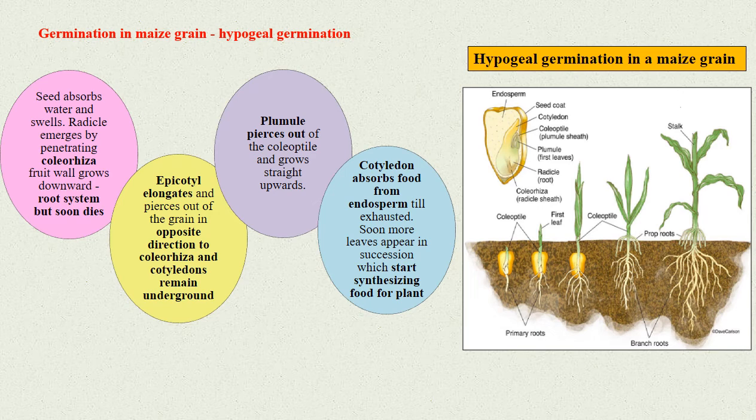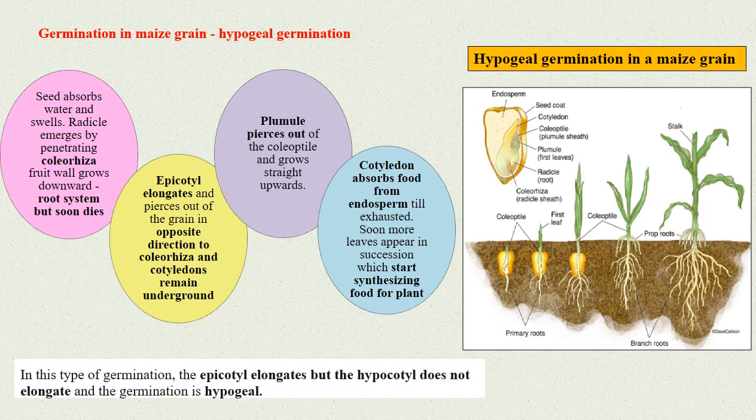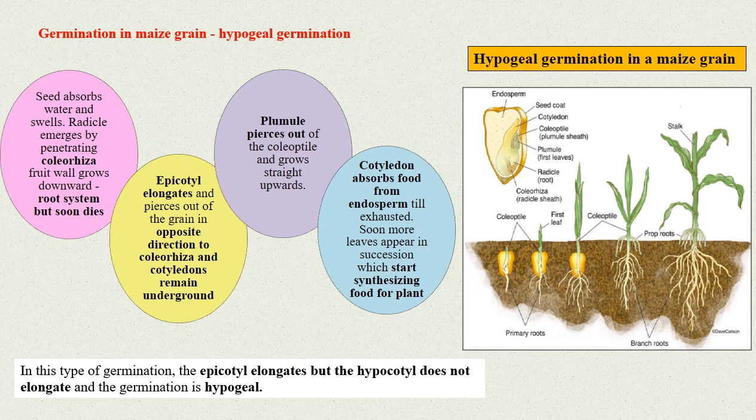Soon, more leaves appear in succession which start synthesizing food for the plant. In this type of germination, the epicotyl elongates but the hypocotyl does not elongate and the germination is hypogeal germination.